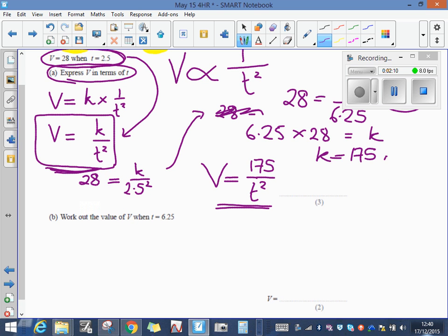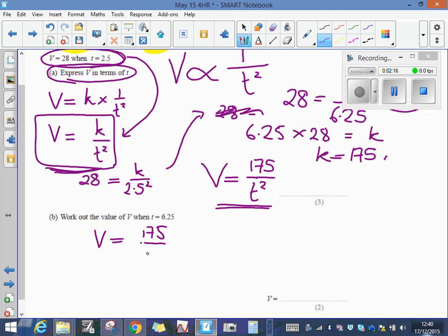Part b now says work out the value of V when t is 6.25. I've got my equation, I know that V equals 175 divided by t squared. If I now substitute that in, t is 6.25.